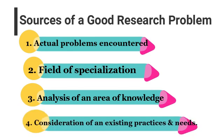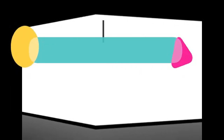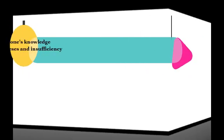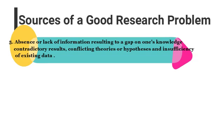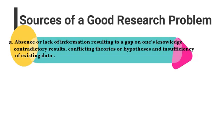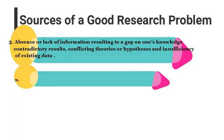Number four: consideration of existing practices and needs — such as dormitories, cafeteria, and other student services, adaptation to the new normal in attending classes, and other practices and needs relative to your field of specialization. Number five: absence or lack of information, resulting in a gap in one's knowledge, and contradictory results, conflicting theories or hypotheses, and insufficiency of existing data. For example, absence of implementing rules and regulations of the policy regarding students' internship.